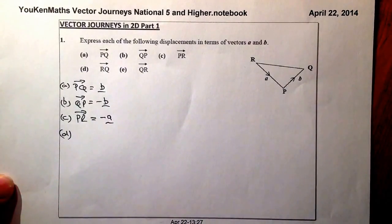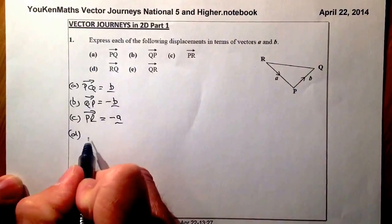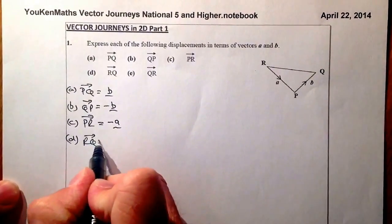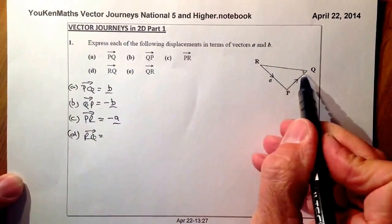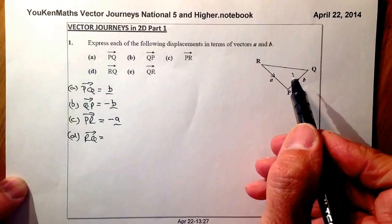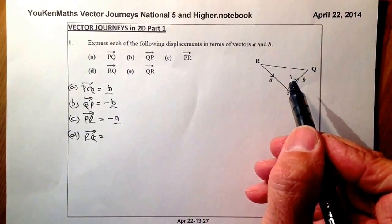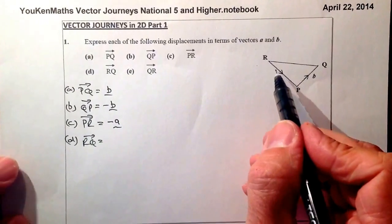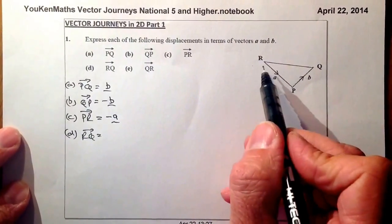For part D, RQ is the vector that I'm interested in. Now if I look at RQ, I don't have any information about RQ. So in this diagram here I'm going to have to look at an alternative route to go from R to Q.